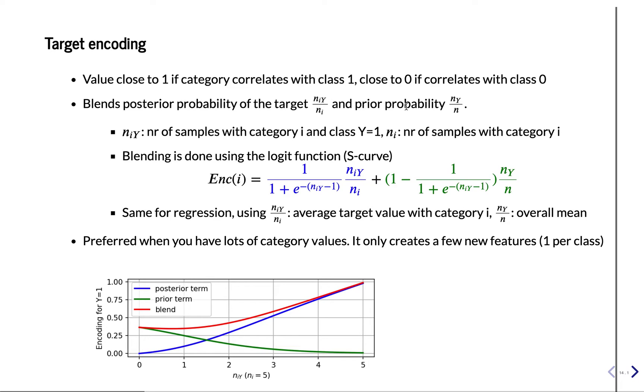The prior is before you look at the category, what can we tell about the label? So before you look at the category, the best we can do is just look at how many times do we have a positive label. It's just the ratio of positive examples.